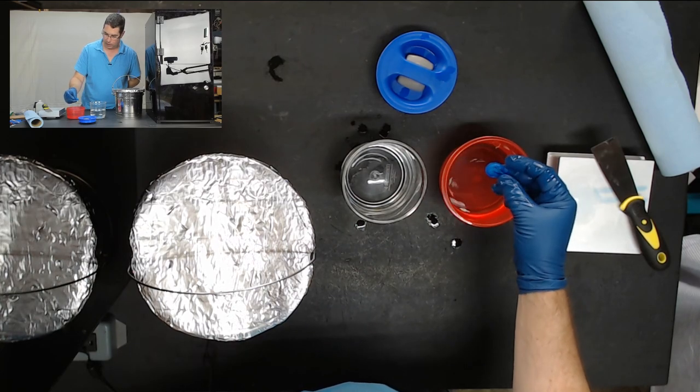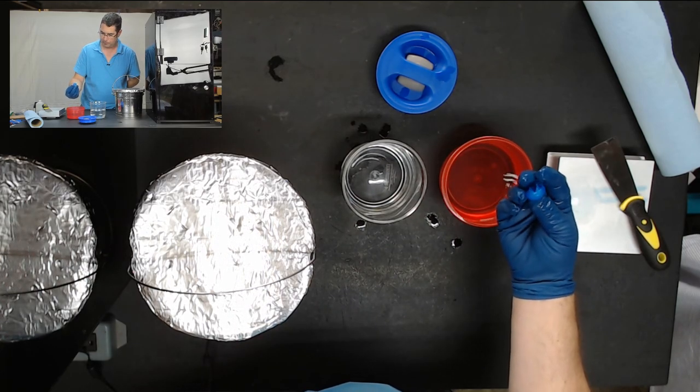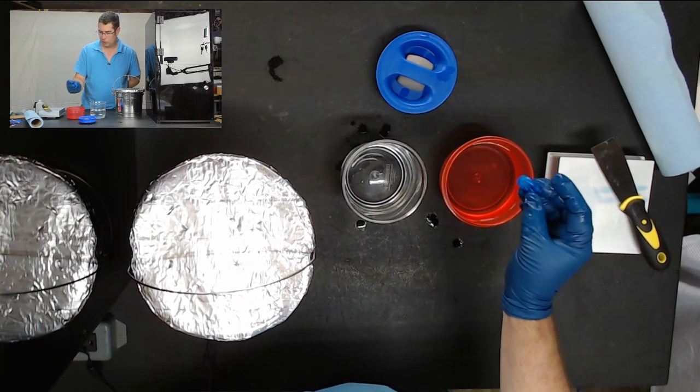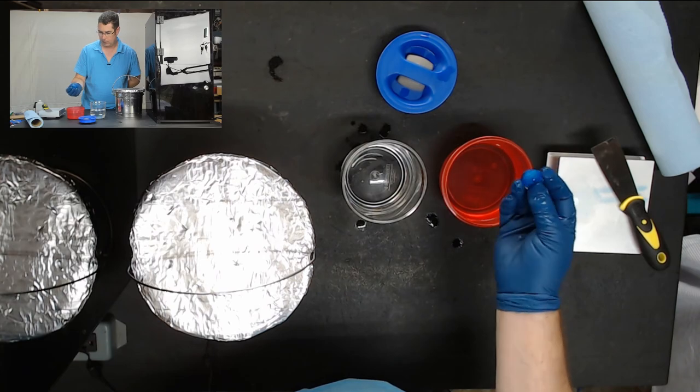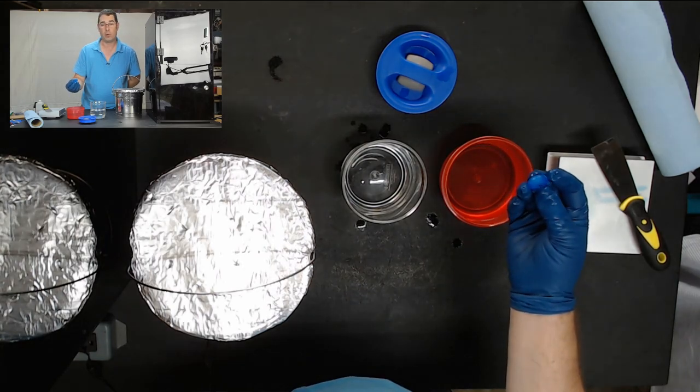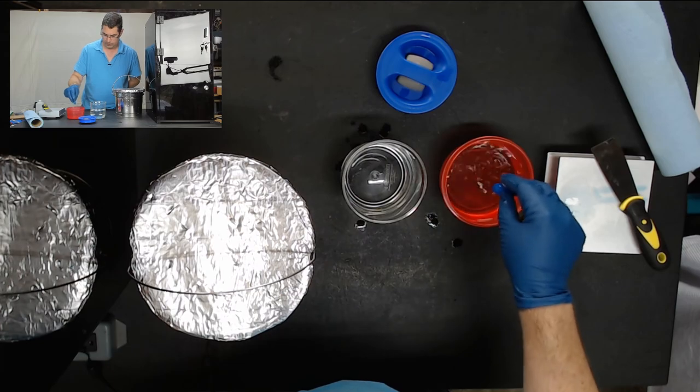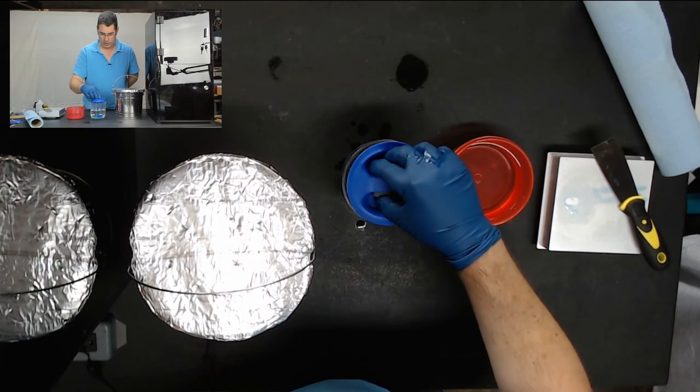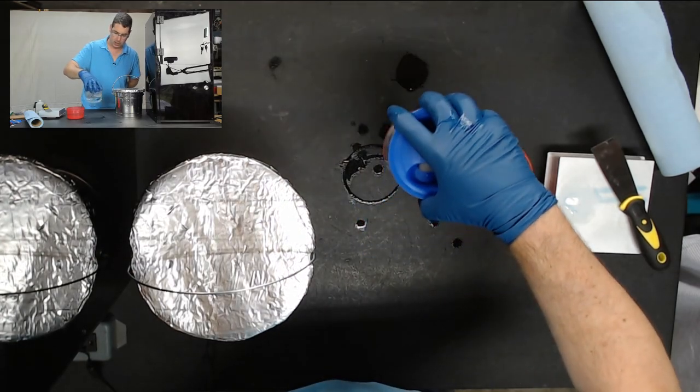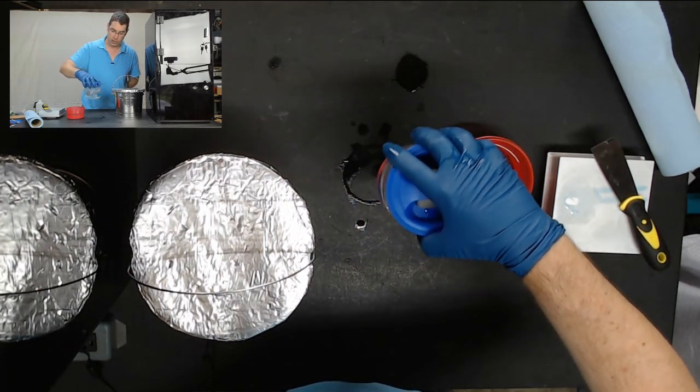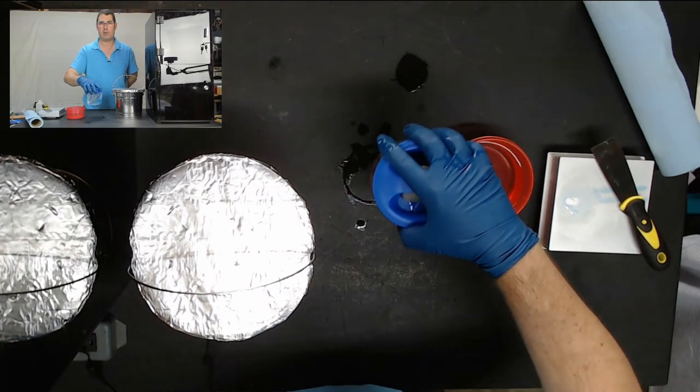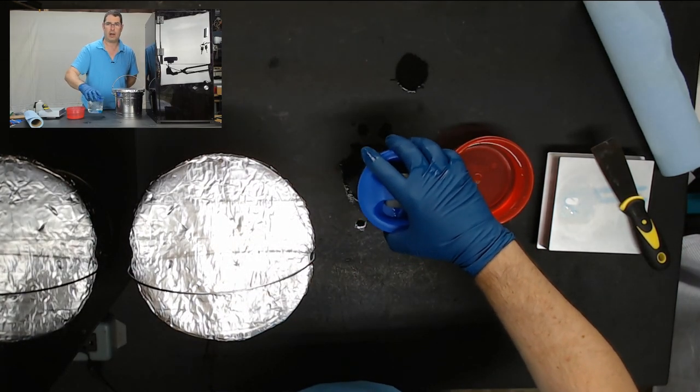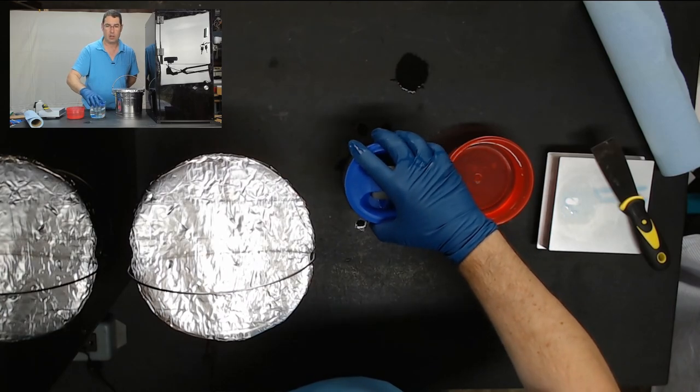Now, you want to avoid handling your part any more than you have to on the part that's your actual model. Handle it by the supports or something that you're going to be snipping away later. We're going to go back into the alcohol, and I'm going to shake that again for about 30 seconds, and we're going to do this for five or six times until we get any of the resin that was left clinging to the part after it came out of the vat off.